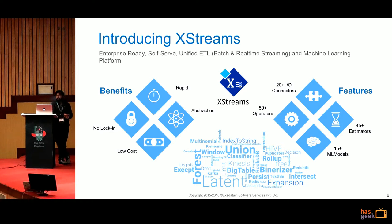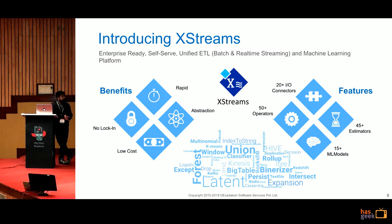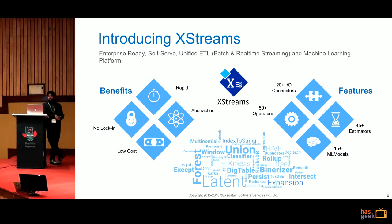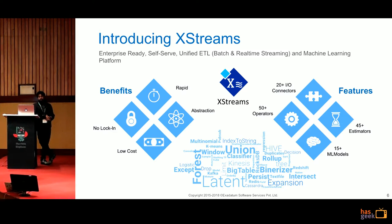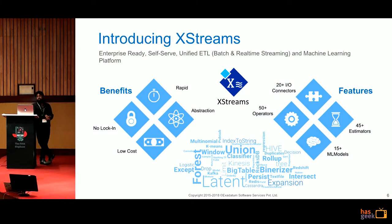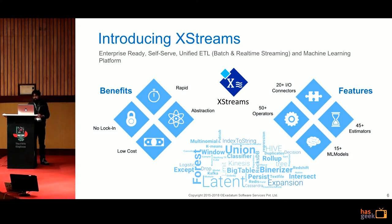Xtremes has 20 plus IO connectors tuned to pull or push data to sources and syncs at scale. It has 50 plus operators for ETL processing activities — joins, enrichment, union, rollups, cubes, and more. There are 45 plus estimators, almost all those provided by Spark, easily used as a simple configurable stage where you just set the hyperparameters. All 15 plus models supported by Spark can be easily modeled on top of Xtremes.